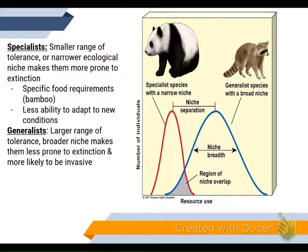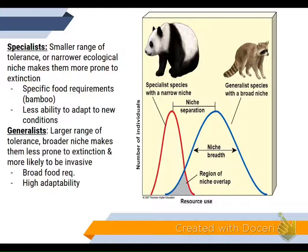A generalist has a higher range of tolerance. They can handle big changes like global warming. They have a broader niche — they can live in downtown New York, such as the raccoon or the rat, or out on an island in the middle of the Pacific. They're more likely to be invasive because they can live just about anywhere, and they have a broad food requirement, meaning they can eat anything from trash to filet mignon. They have high adaptability, meaning if conditions change, they're fine with it.